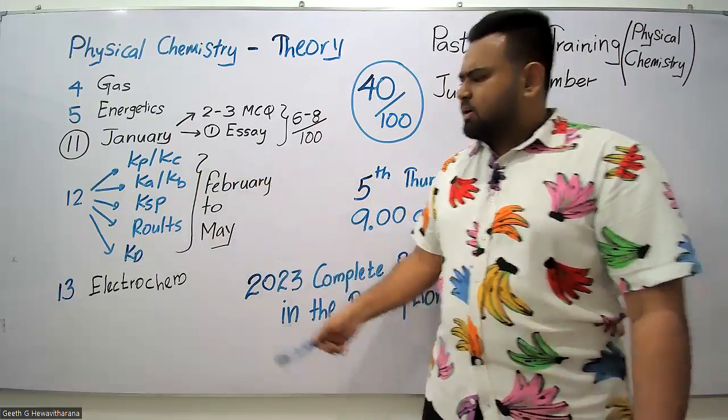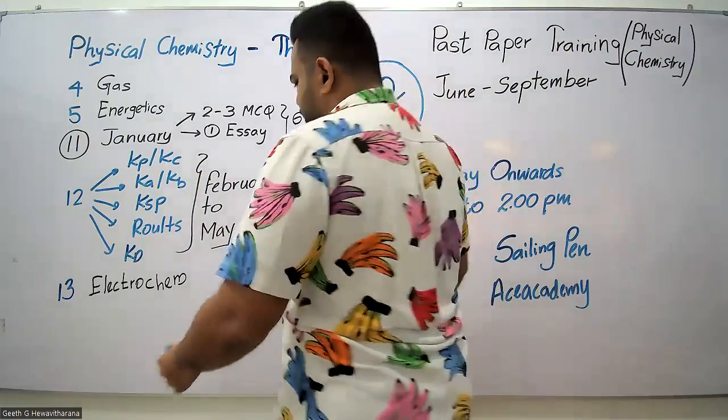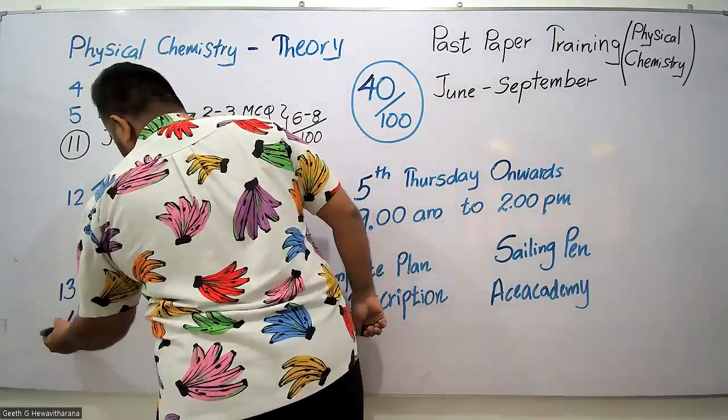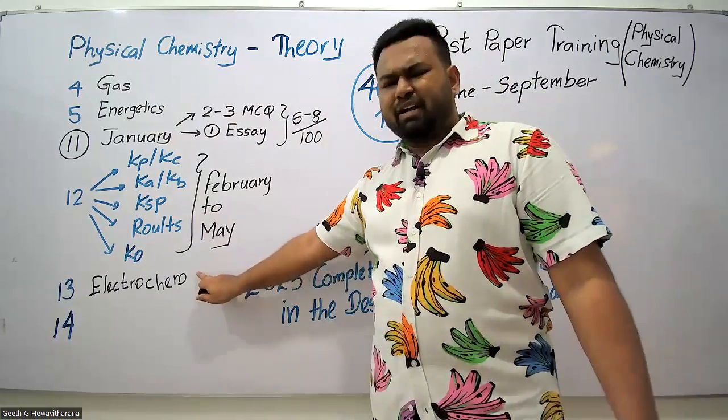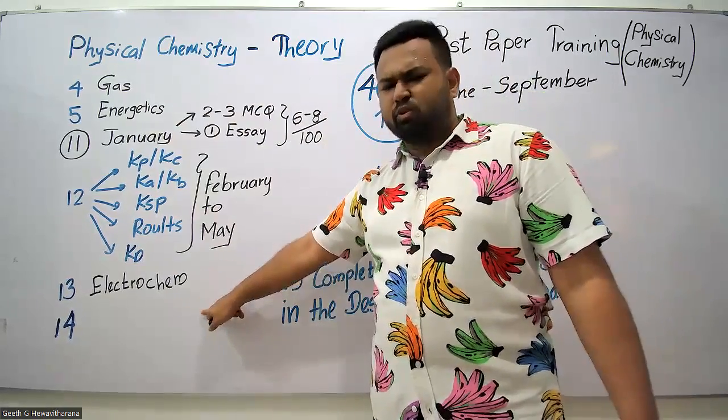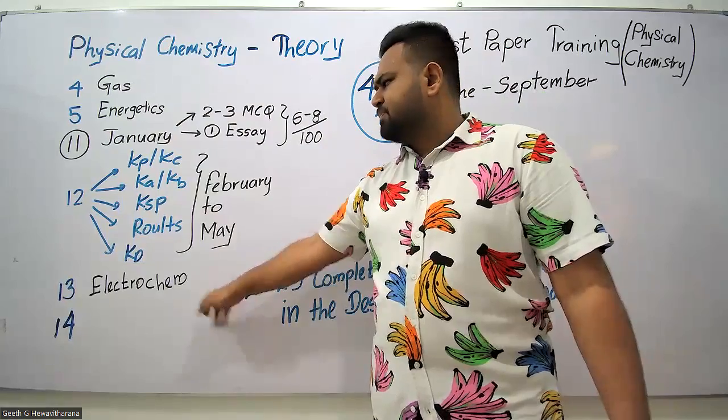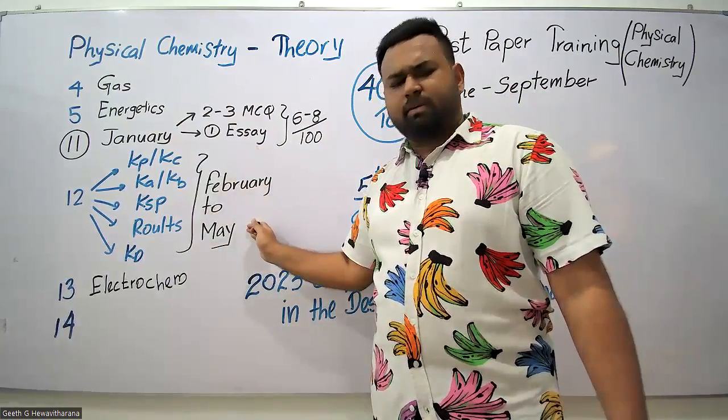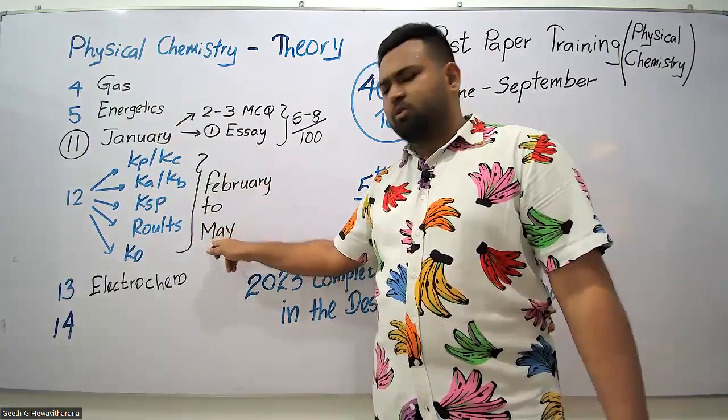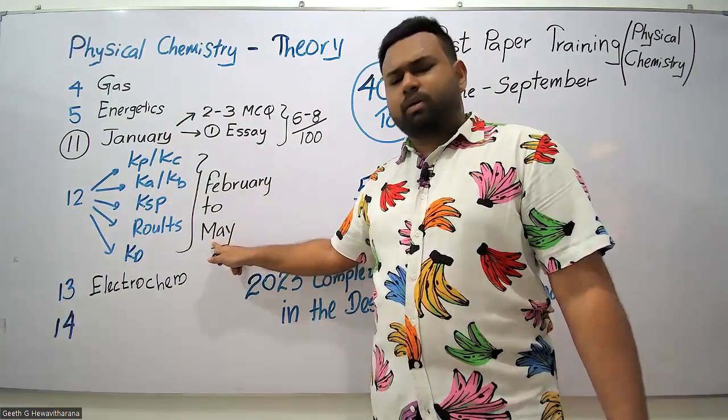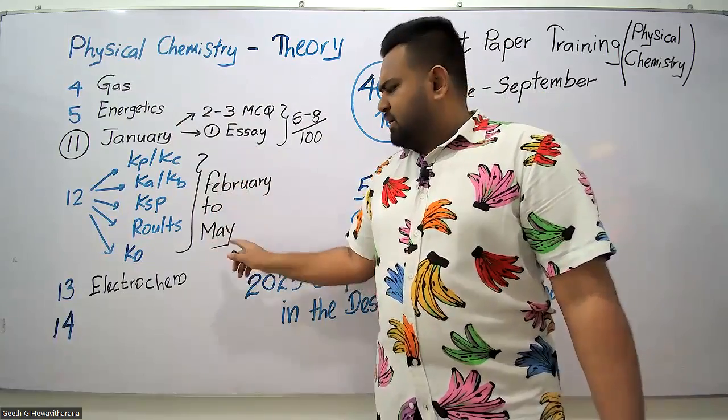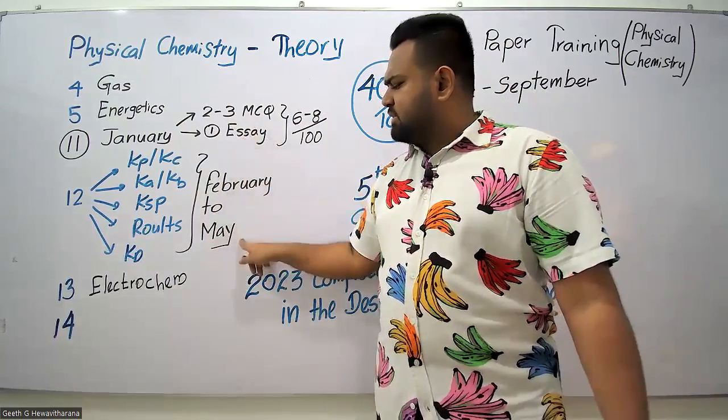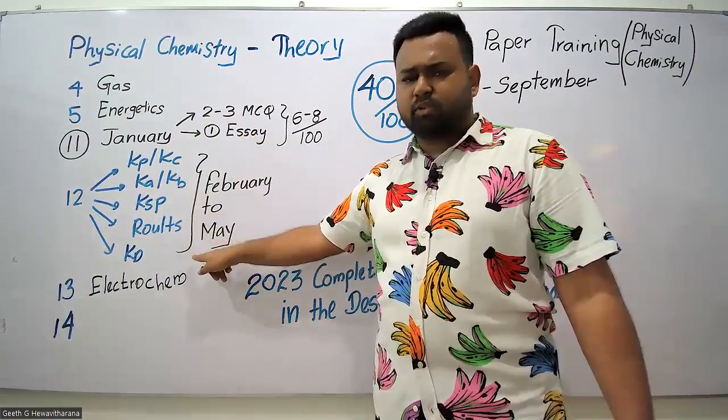If you finish up to the 12th unit, you've done most of the syllabus. Only Unit 13 and Unit 14 are left—Industry and Electrochemistry. Each needs only one month. After finishing this theory class of Physical Chemistry in May, you cannot obtain a higher grade without proper coverage.